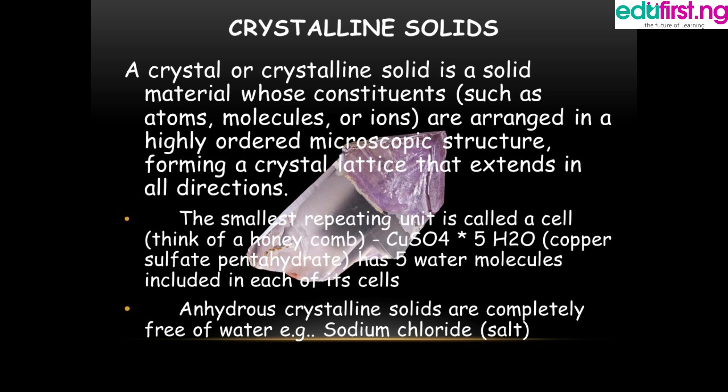The smallest repeating unit is called a unit cell. Think of a honeycomb — you see small rooms arranged together; it is like that. For example, copper sulfate pentahydrate has five water molecules included in each of its cells. Anhydrous crystalline solids are completely free of water — for example, sodium chloride, which is salt. When you look closely under a microscope you will realize that salt is a crystal, but introduce water into it and it dissolves.